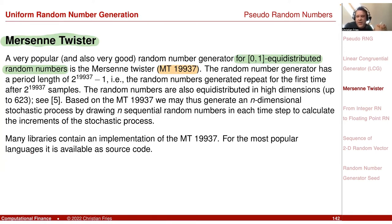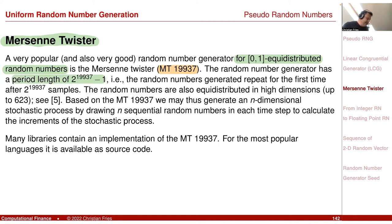The Mersenne Twister has a huge period length. For the linear congruential generator with M = 2^48, the period length is at most 2^48. For the Mersenne Twister, the period length is exactly 2^19937 − 1. Additionally, it has good properties up to dimension 623, meaning you can generate sequences in a 623-dimensional space without the hyperplane issues of the LCG.